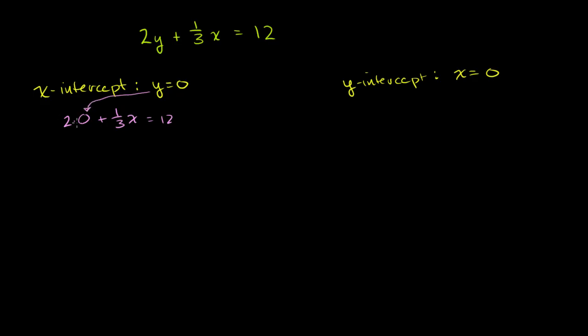Right? I put 0 for y. Well, anything times 0 is just 0. So you're just left with 1/3 x is equal to 12. To solve for x, we can think of it as either dividing both sides by 1/3, or we can multiply both sides by the reciprocal of 1/3.